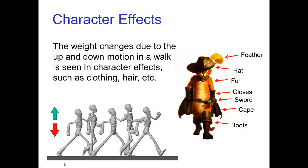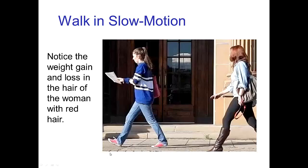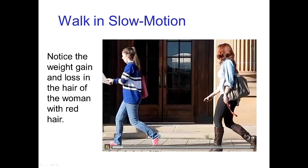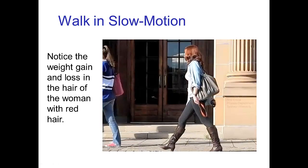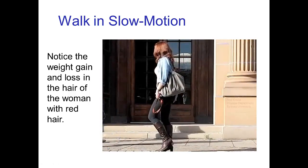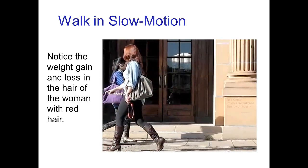This variation in weight is noticeable in character effects — you see this in the character's clothing, the hair, if a character has fur, and so forth. This variation in weight is visible in these character effects. Here's an example: watch the woman with the red hair as she's walking. Here it's in slow motion, making it easier to see those variations of her weight reflected in her hair.